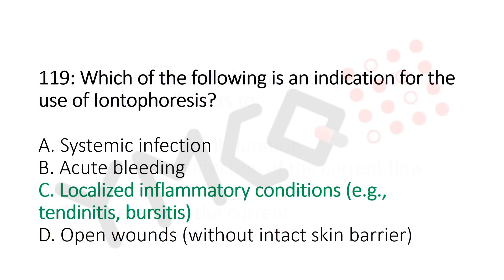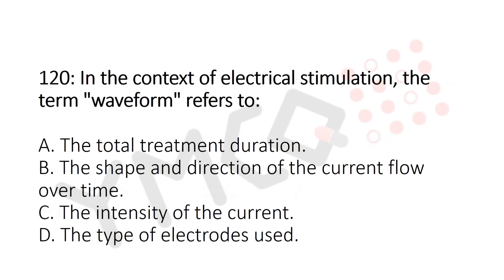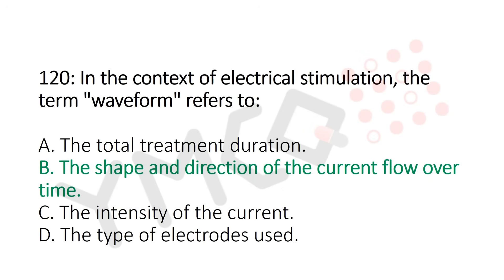Question number 120: In the context of electrical stimulation, the term waveform refers to: Option A: the total treatment duration. Option B: the shape and direction of the current flow over time. Option C: the intensity of current. Option D: the type of electrode used. And the answer is Option B: the shape and direction of current flow over time.